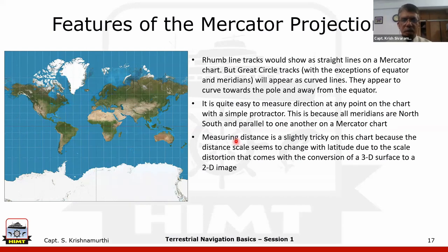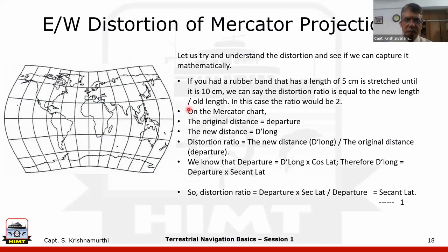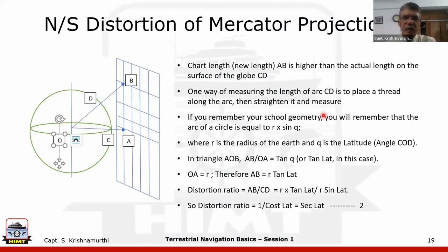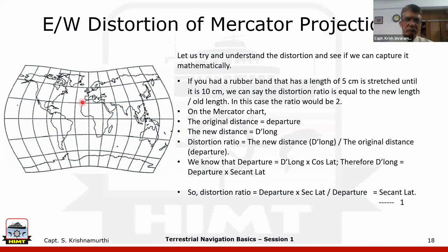Measuring distance on a Mercator chart requires care. You must measure distance against the latitude scale alongside the area being measured, because the scale changes with latitude due to the distortion ratio equal to secant of the lat.